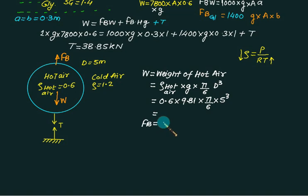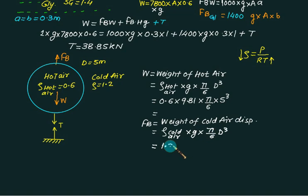Second equation: we can calculate the buoyant force, which is equal to the weight of cold air displaced. In the case of a fully submerged body, the volume of air displaced is the same as the volume of the balloon. Weight of cold air is given by density of cold air multiplied by g, multiplied by π by 6 d cubed. Here we substitute density of air equal to 1.2, g is 9.81, π by 6 into 5 cubed. We can solve this, so the first answer will get us 385.23, and this one is 770.46.